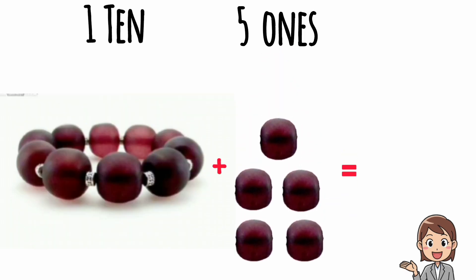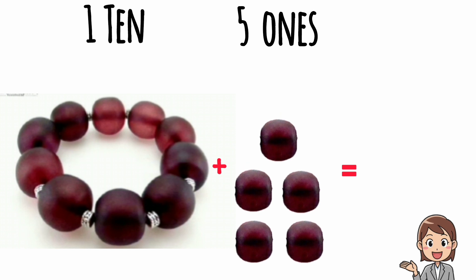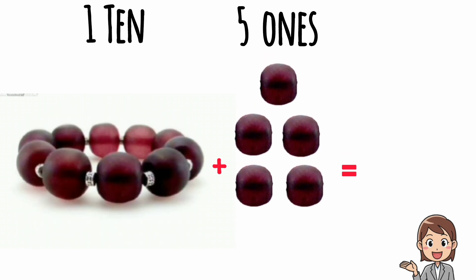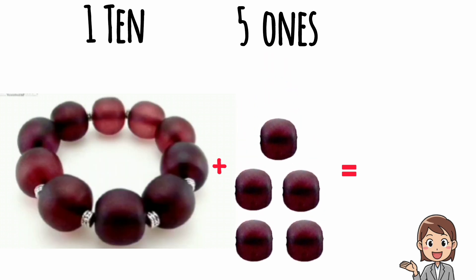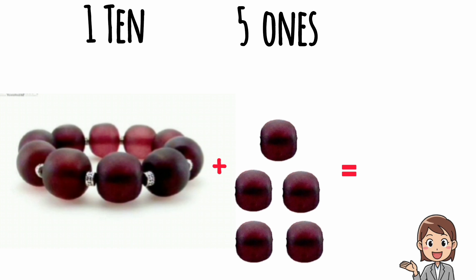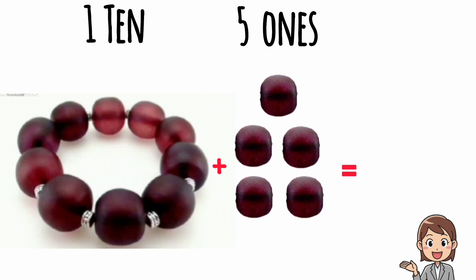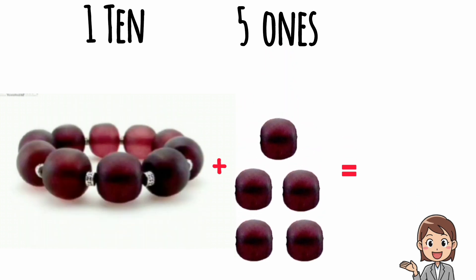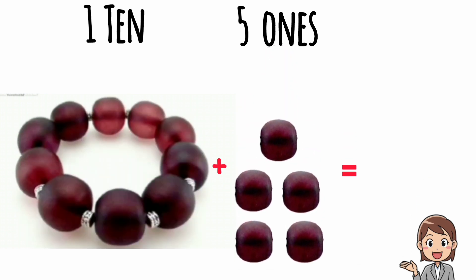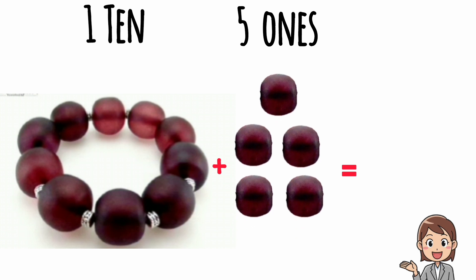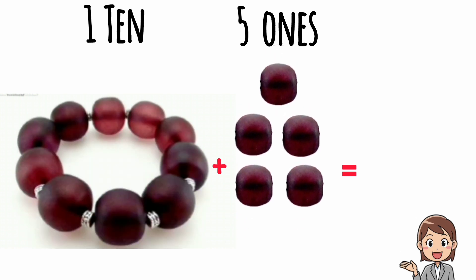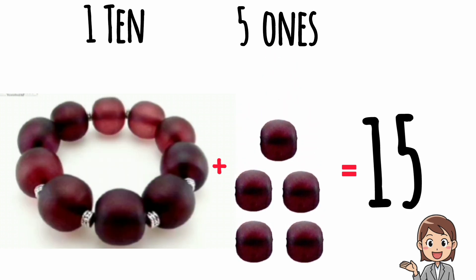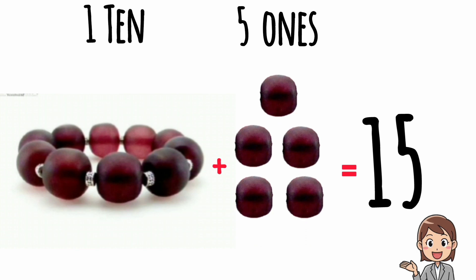Here we have one bracelet and five beads. One bracelet means one ten and five beads means five ones. So one ten and five ones make fifteen. Fifteen.